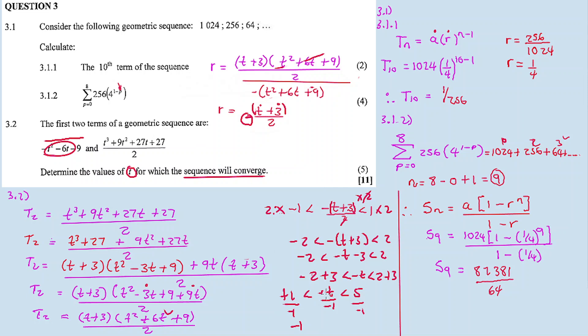Therefore the answer is -5 < t < -1. Since we divided by -1, we reversed both inequality signs, swapping the values. So the sequence converges for -5 < t < -1. That concludes Question 3.